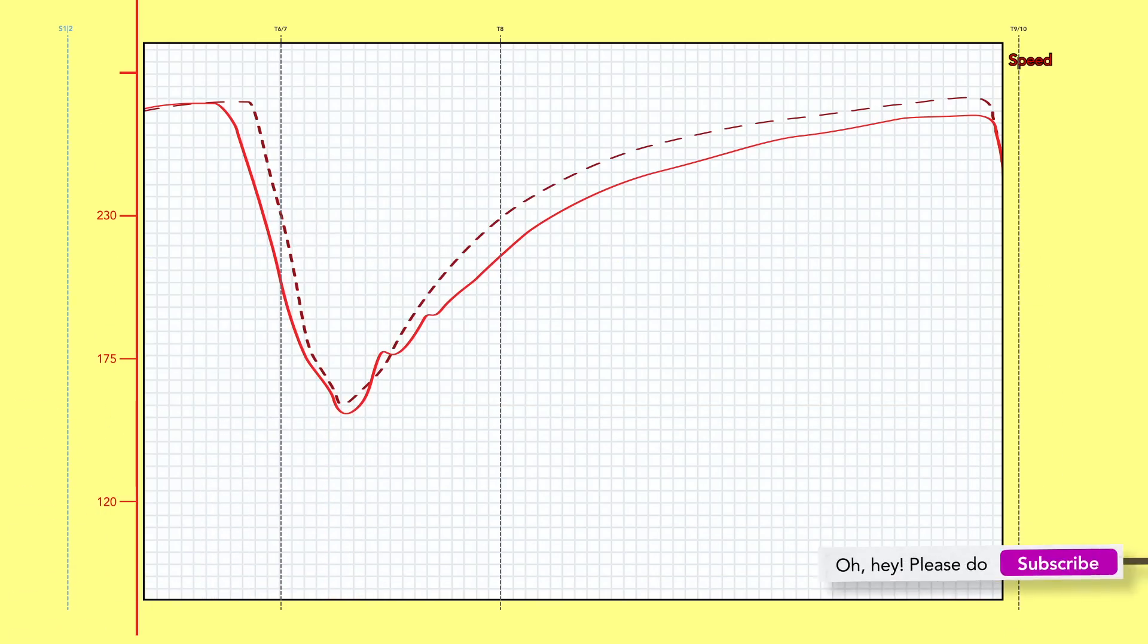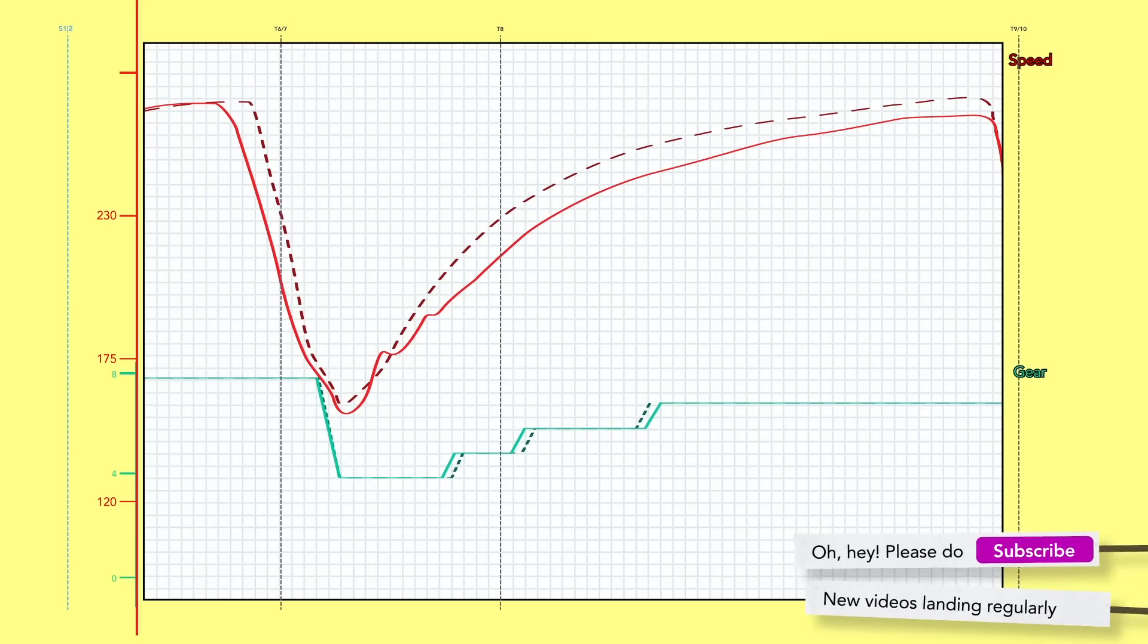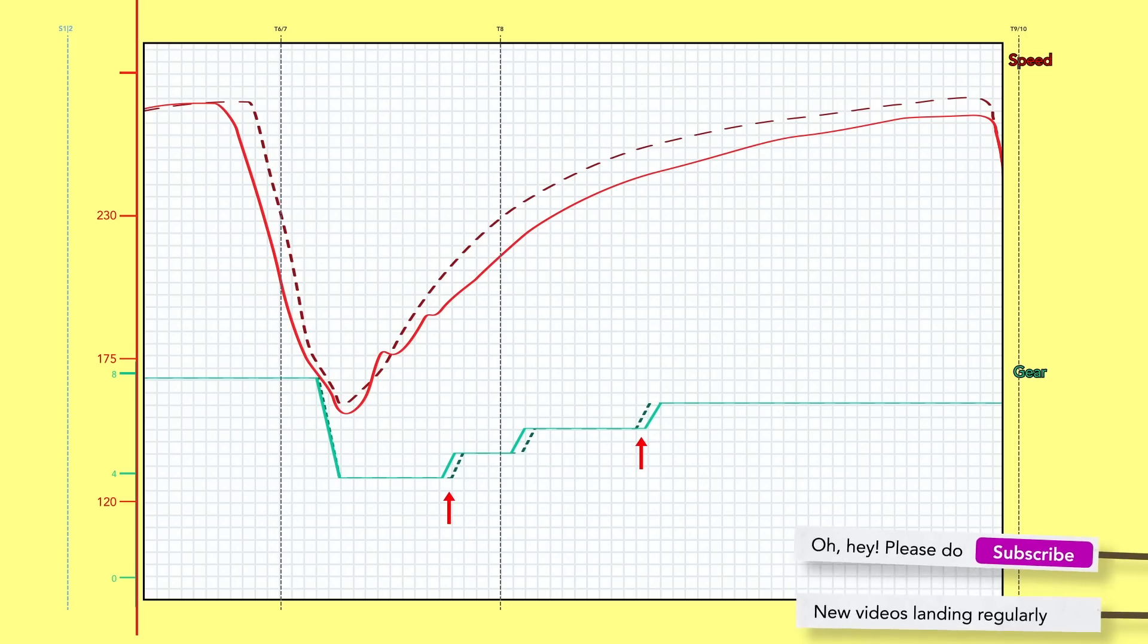Something else to look for is when we're changing through the gears. Are we changing up too early, too late? Mapping these changes against our teammate or against multiple runs and seeing how that translates to the acceleration curves and lap time deltas will help you hone that in.